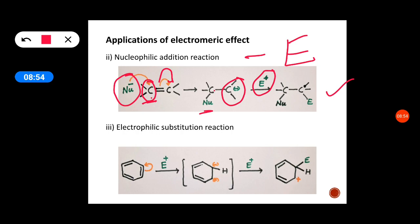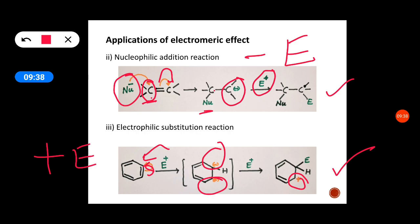Same applies to electrophilic substitution reactions in aromatic compounds. Suppose an electrophile attacks a carbon in benzene — all six bonds are same in benzene. When the electrophile attacks one carbon, the pi electron is shifted towards that carbon, so one carbon acquires negative charge and another acquires positive charge. The electrophile goes to the carbon with negative charge. So in electrophilic substitution reactions of aromatic compounds, positive electromeric effect is observed.